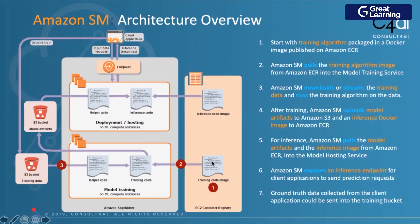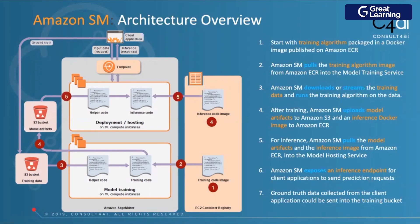The training process starts because the Docker container came up. Once the training process is completed, it produces a model artifact, which gets stored inside an S3 bucket. An inference code image is also created inside ECR — Elastic Container Registry. So you have a model artifact as well as an inference image. Now you need to deploy that model. When you deploy it, the inference code and the model artifact from S3 are combined together to create an endpoint.